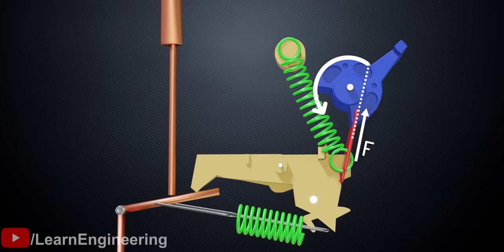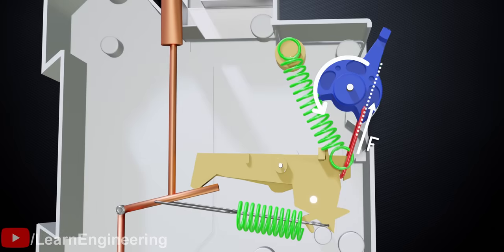When the MCB is on, this will be the position of the lever. The structure of the MCB will block the lever from rotating further counterclockwise.